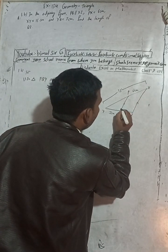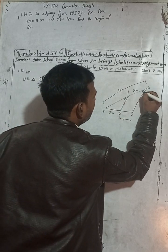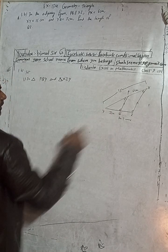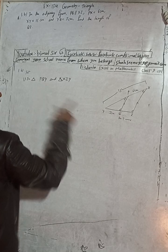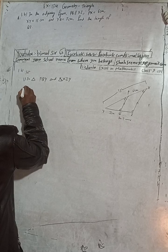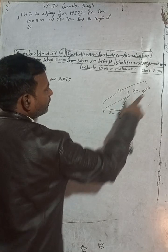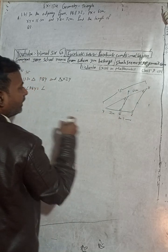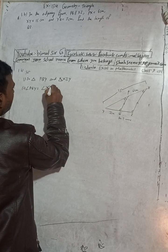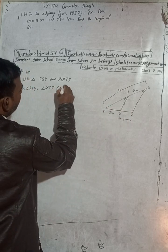Since PQ is parallel to XZ, this angle is equal to this angle, and this angle is equal to this angle. So angle PQY is equal to angle XZY — this is because PQ parallel to XZ gives us corresponding angles.